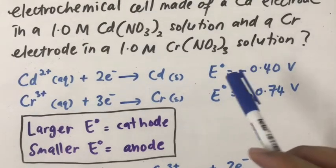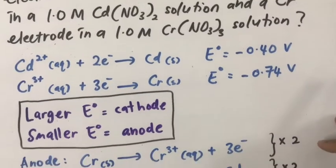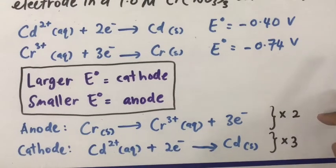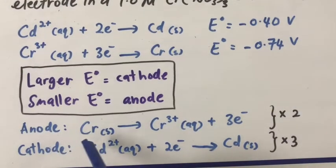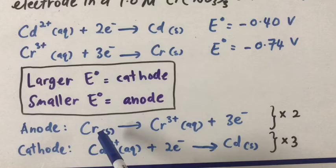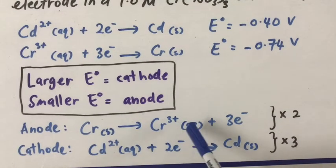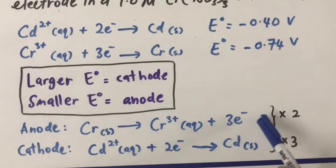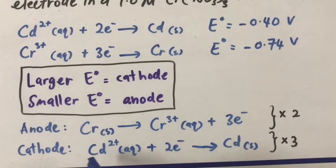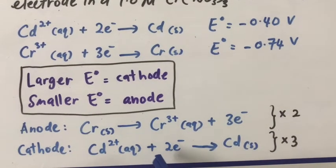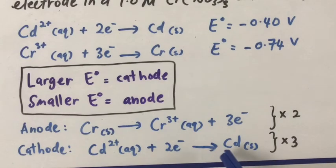We need to rewrite the half-reactions for this redox system. Here, chromium undergoes oxidation, becoming Cr³⁺, releasing 3 electrons. The cathode will undergo reduction where Cd²⁺ accepts electrons and becomes Cd solid.